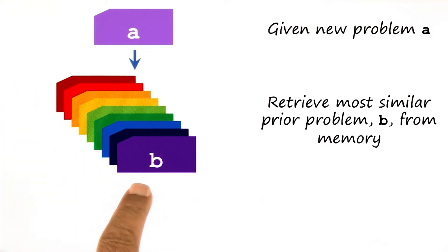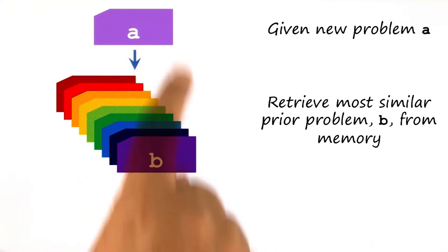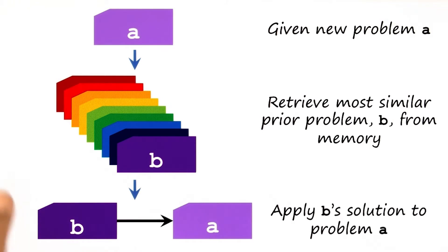So we retrieve the case B that is most similar to the new problem A. In this particular case, we're deciding by color. And whatever was the solution to B, we apply to the situation A.